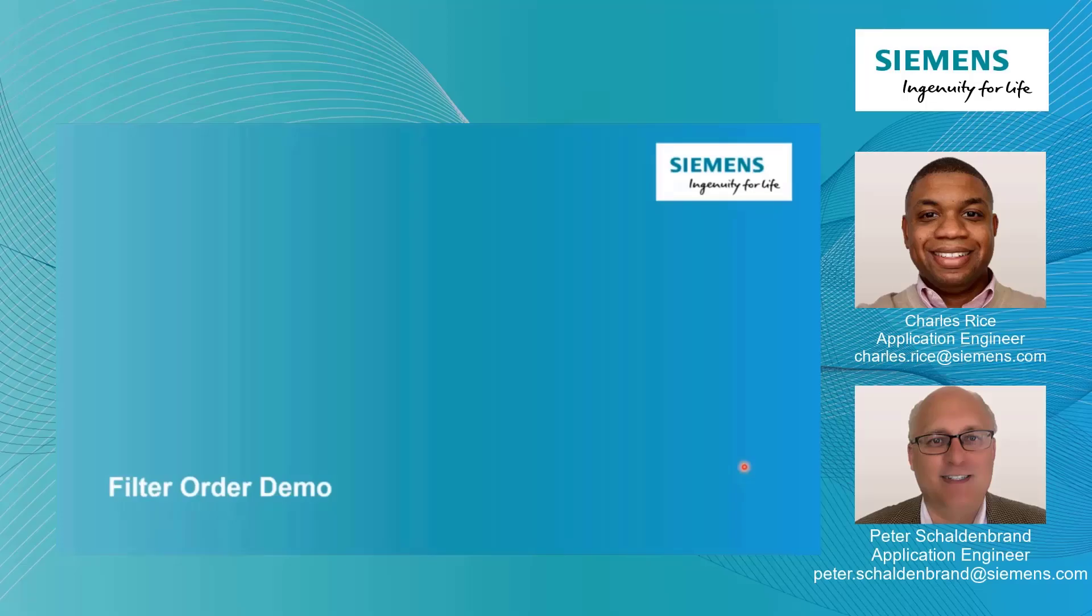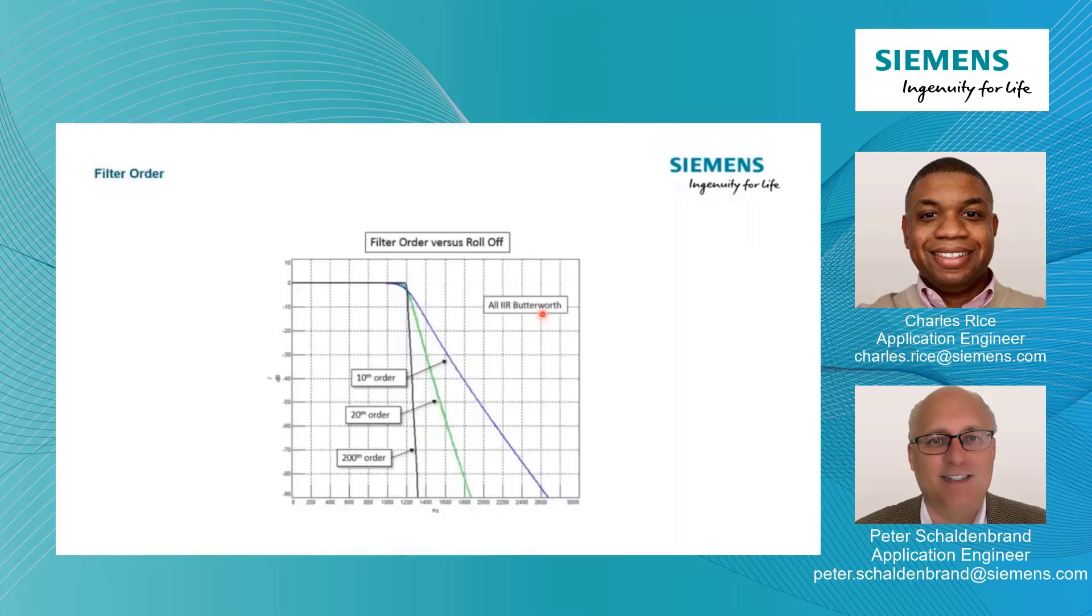So I have another slide here, just basically summing up what Pete was talking about there. When it comes to defining these FIR filters, the higher order, the sharper the filter. And we can see that from 10 to 200, we can see quite a bit of difference.